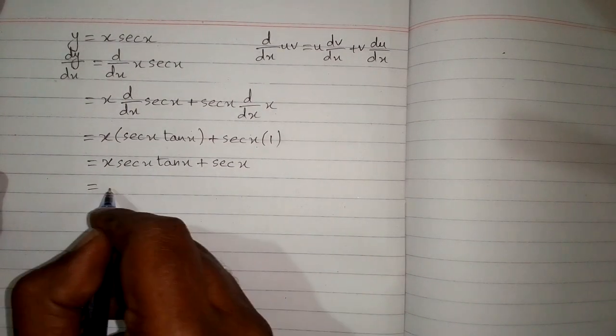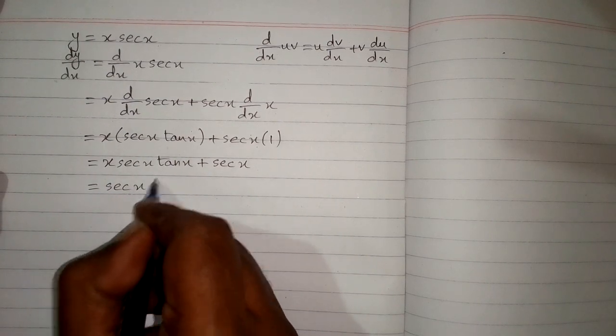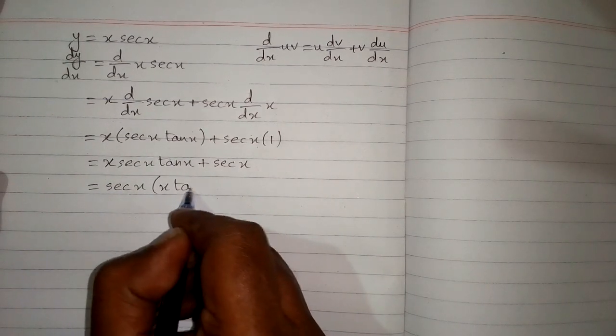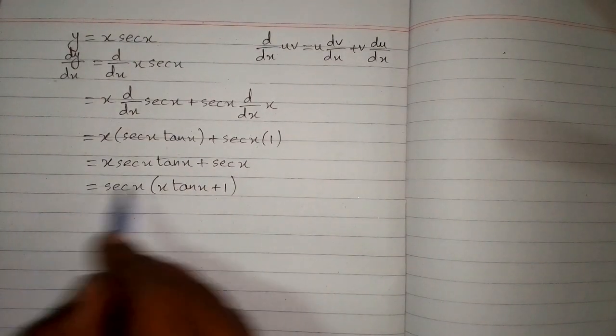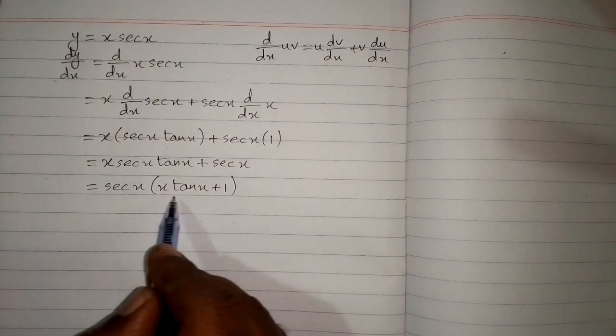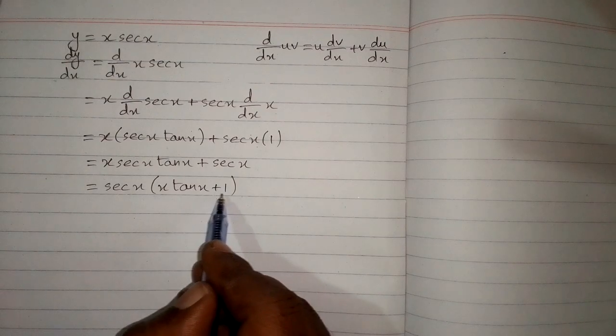Or we can take sec x common, so we have sec x multiplied by x tan x plus 1. So the answer can be written as sec x multiplied by x tan x plus 1.